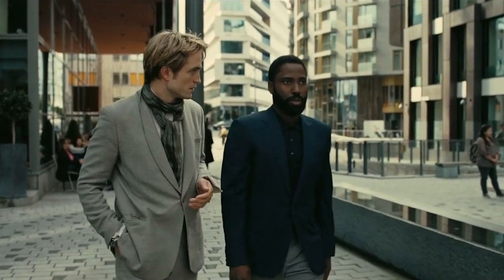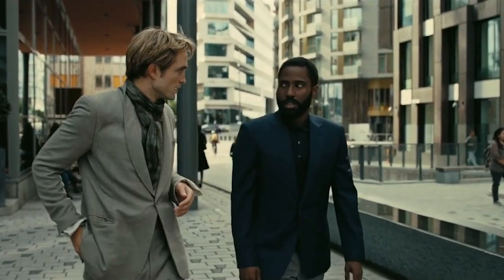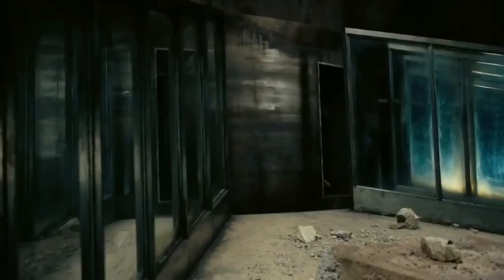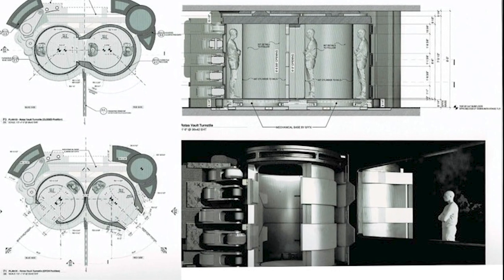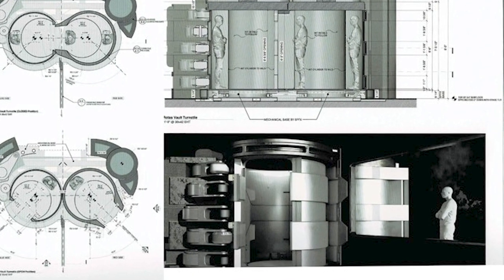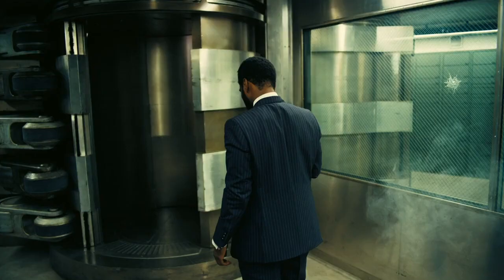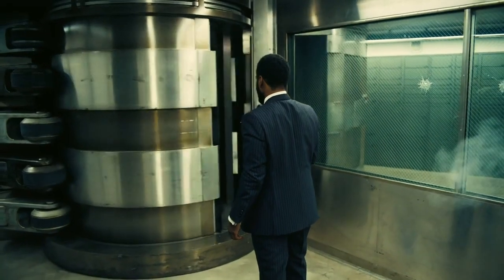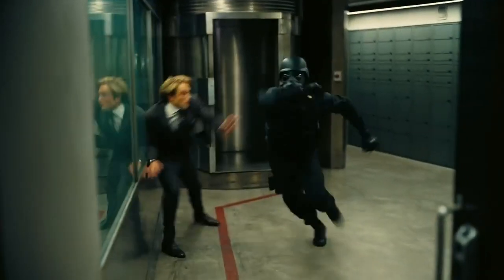In Tenet, the time machine used is called a turnstile. It can look like this, or this, or this, or this. Basically, it consists of two cylindrical chambers with openings that rotate towards each other until the openings meet. You go inside one chamber, it rotates, and then you go out the other chamber — and when you do, you are inverted.